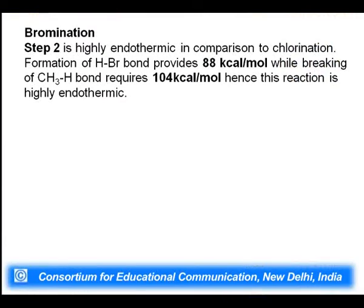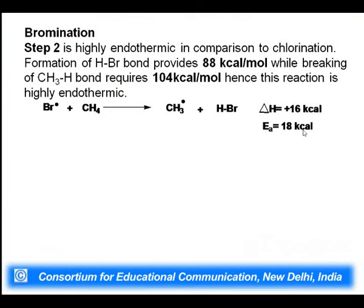In bromination, similarly the C-H bond breaks and H-Br bond forms. However, when H-Br forms it releases only 88 kilocalories per mole (compared to 103 for HCl), while breaking the C-H bond still requires 104 kilocalories per mole. The difference is 16 kilocalories, but since bond making and breaking do not occur at the same rate, the overall activation energy for step 2 in bromination is 18 kilocalories per mole.